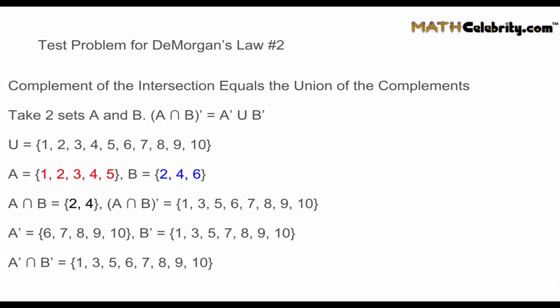With both DeMorgan's Laws proven, let's finish up. The key shortcuts: whenever you hear 'union,' think 'or'; whenever you hear 'intersection,' think 'and.' The complement of the intersection equals the union of the complements, and the complement of the union equals the intersection of the complements. Thank you for watching the DeMorgan's Law video — see you in the next video. Bye.